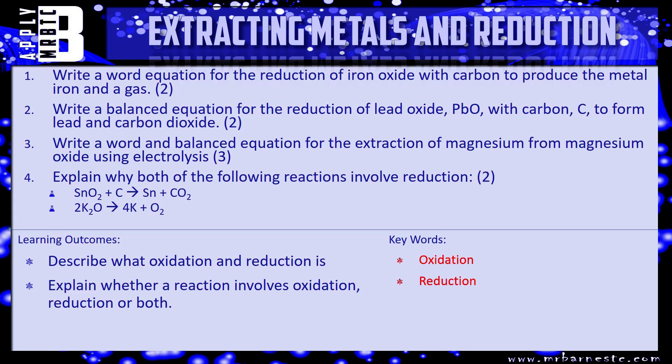You should be able to work out the formula for lead and for carbon dioxide, then it's just a case of balancing it. Question three: write word and balanced equations for the extraction of magnesium from magnesium oxide using electrolysis. Think about what you're starting off with — the metal you're going to form is magnesium, so what is the other gas?